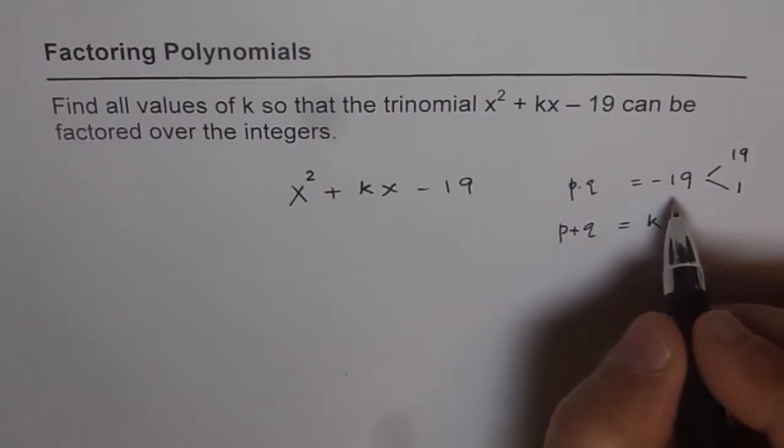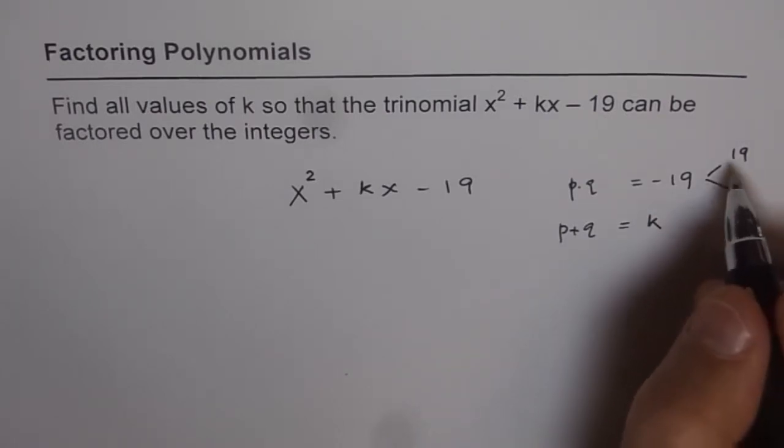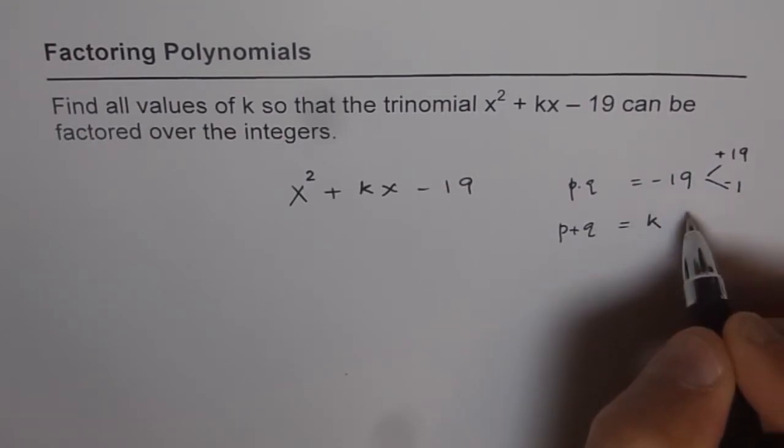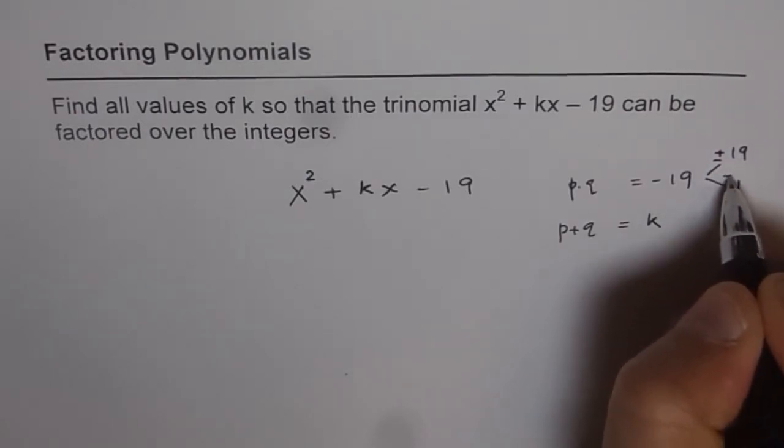Now, since we need minus 19, then we can use two combinations. We could use either plus 19 with minus 1 or we could use minus 19 with plus 1.